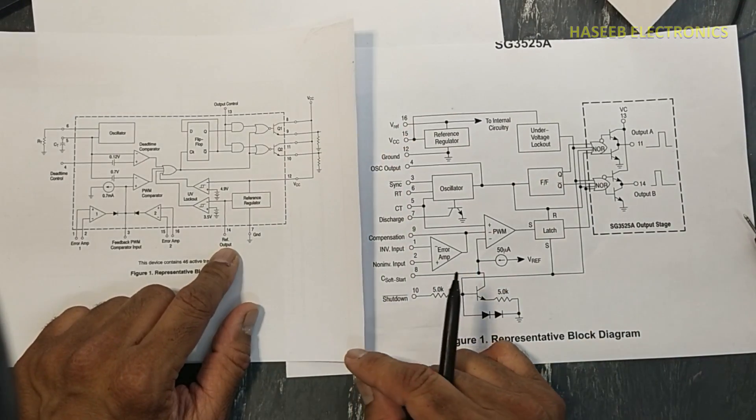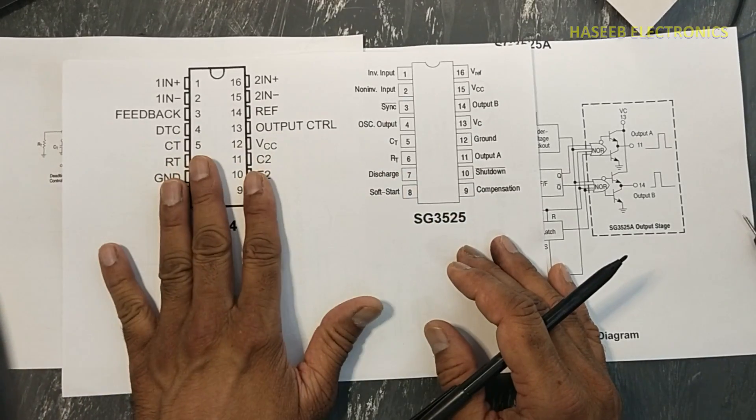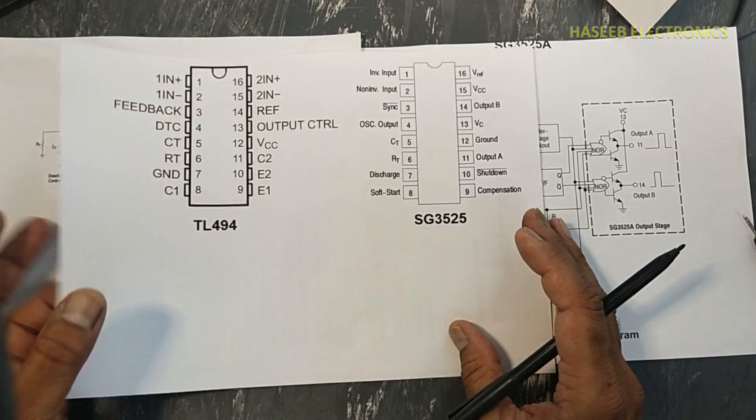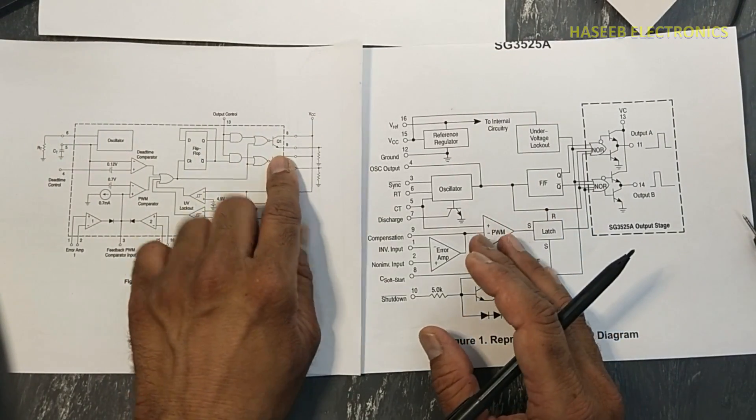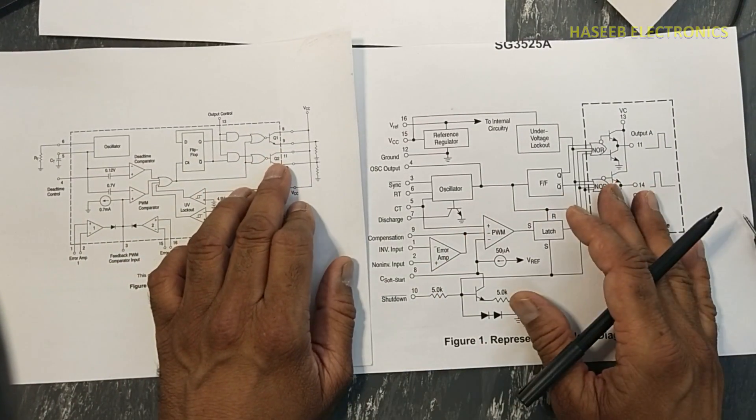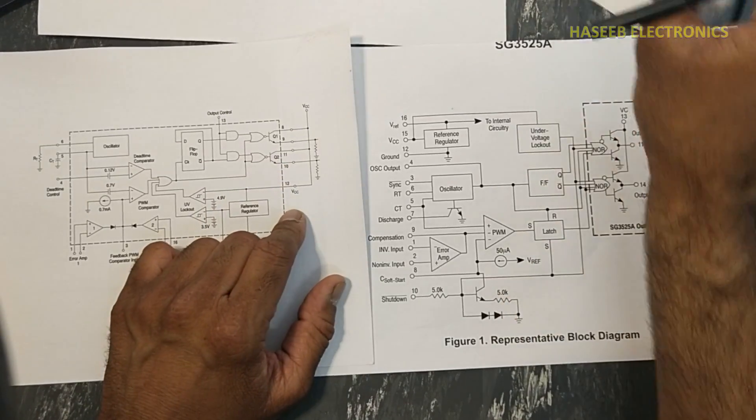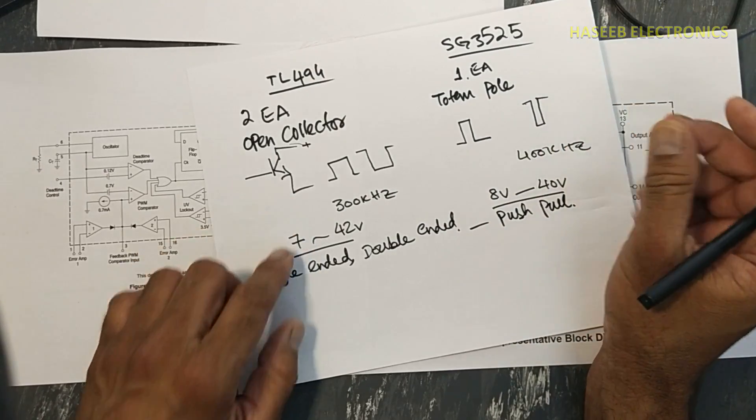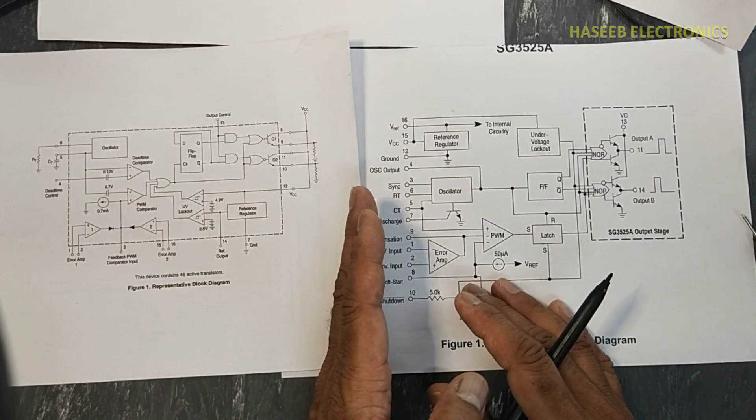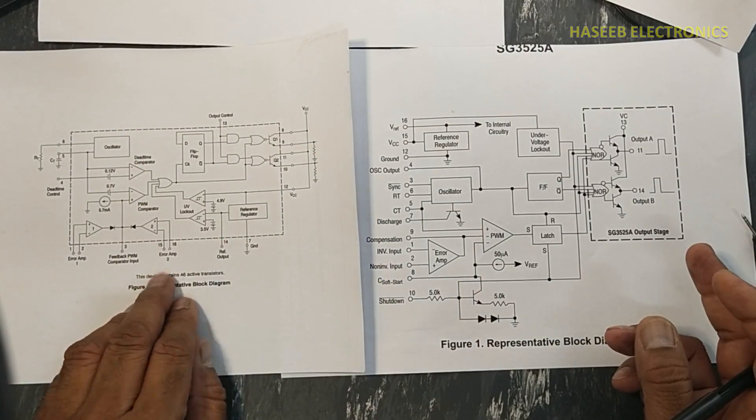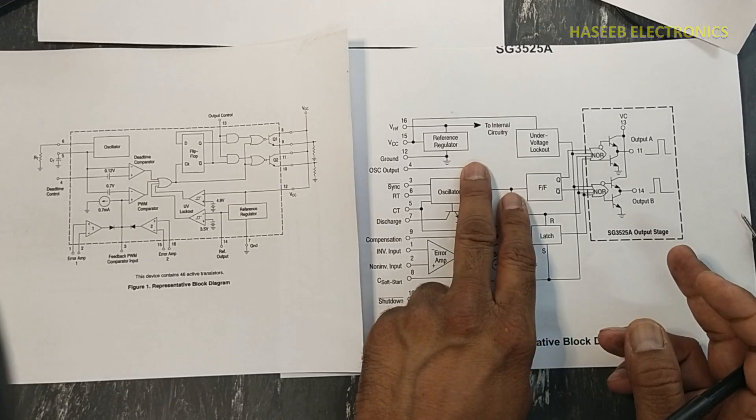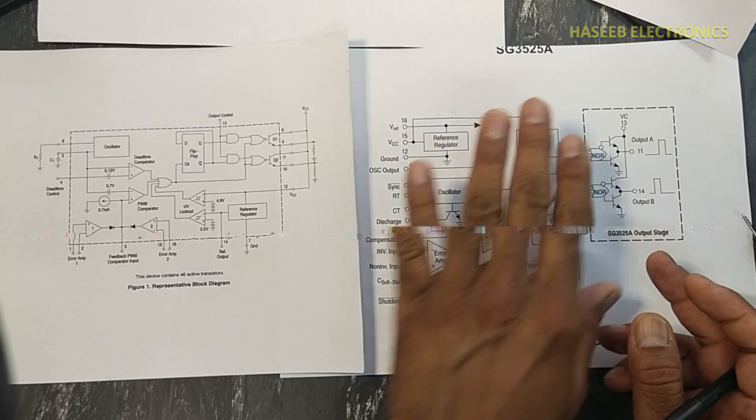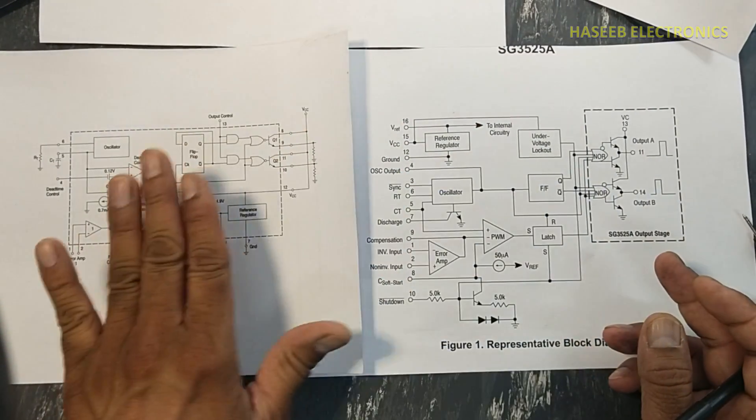If you compare the pinout of both ICs, at that time we cannot replace these ICs. And if we check the function of both output stages, at that time we cannot replace because this has open collector output and this has totem pole output. But if we rearrange circuit using datasheet and if we compromise one error amplifier and we just only control voltage or we are going to monitor the current, at that time we can rearrange the circuit to use this IC in place of this.